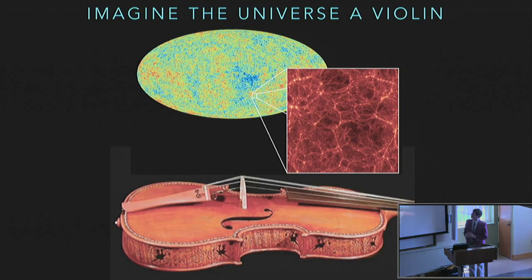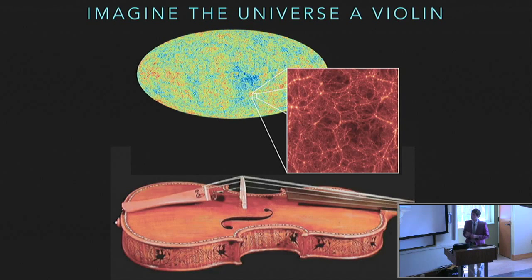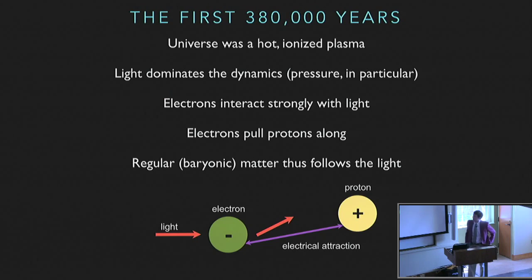Now imagine the universe as a series of violins throughout space. This is the cosmic microwave background from the Planck satellite, and the zoom-in is a late-time simulation of the distribution of galaxies. Each point where there's extra mass in the early universe is actually like someone plucking a violin, launching a spherical sound wave outwards. So how do we understand how these waves get launched? We need to step through what's going on in the first 380,000 years of the universe's history.